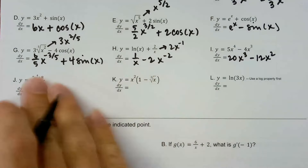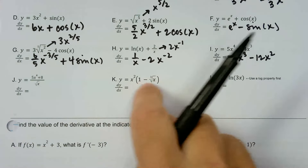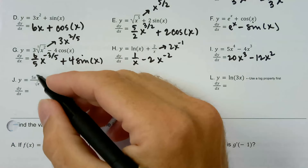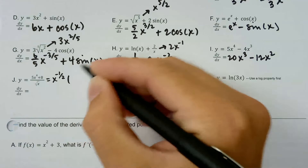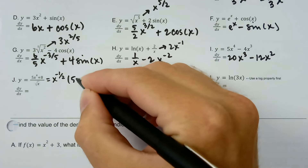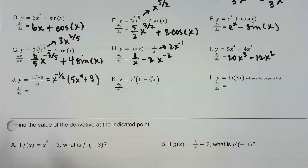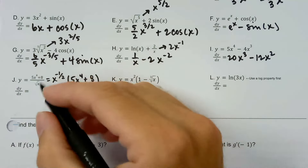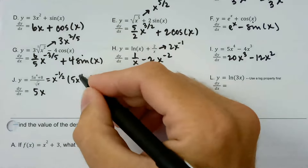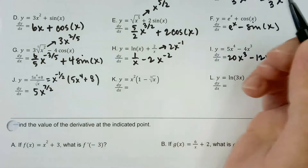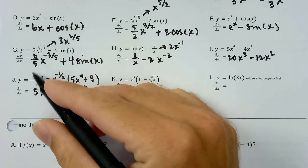Here we have multiplication and division — we are going to need to simplify first before taking the derivative, because you can't just take the derivative at the top and the bottom of a fraction, or with two factors that are getting multiplied together. So what we're going to do is say x times square root of x in the denominator is dividing by x to the 1/2, which is like multiplying by x to the negative 1/2. Then we've got 5x to the 4 plus 8, getting an x to the negative 1/2 distributed over it. So maybe 5x to the 7/2 — because four minus a half is seven halves — then plus 8x to the negative 1/2, distributing that over both of those terms.